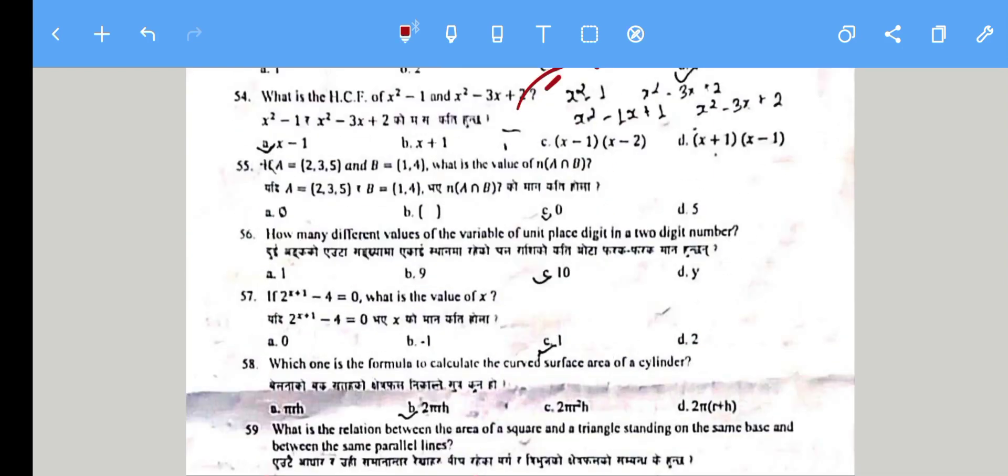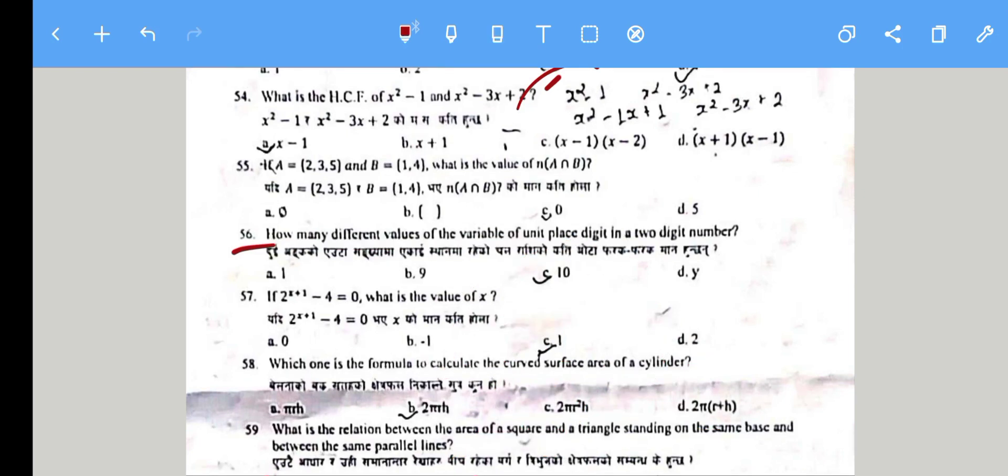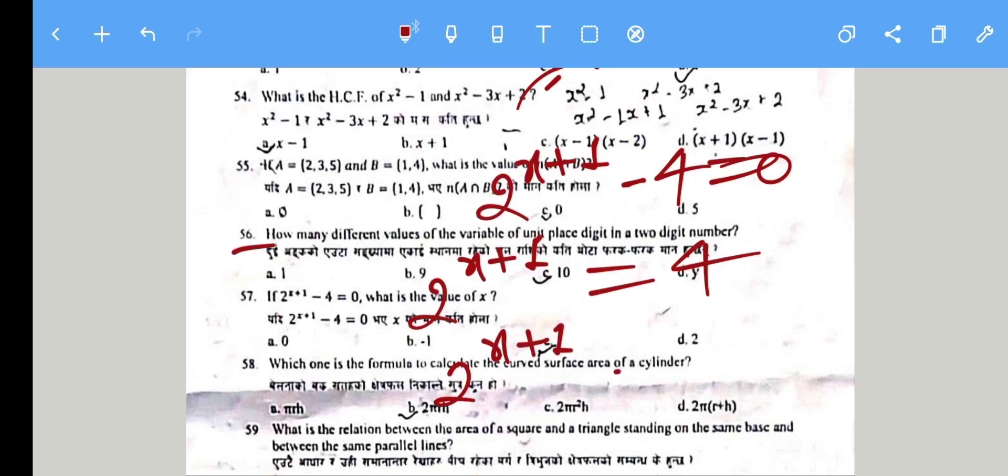Question 56: How many different values are possible for a two-digit number? A two-digit number is 10x + y, so there are 10 possible values. Question 57: 2^(x+1) - 4 = 0. So 2^(x+1) = 4 = 2². Therefore x + 1 = 2, giving x = 1.